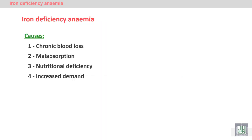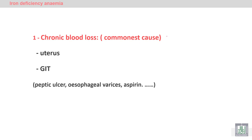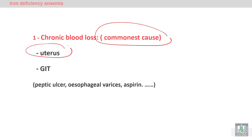The causes of iron deficiency anemia include: most importantly, chronic blood loss, followed by malabsorption of iron, nutritional deficiency, and increased demand in certain groups. Chronic blood loss is the most common cause, and females are the most commonly affected group due to the menstrual cycle. Child-bearing females are particularly at risk.